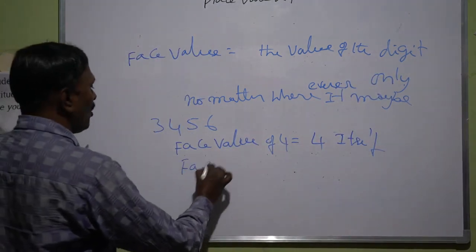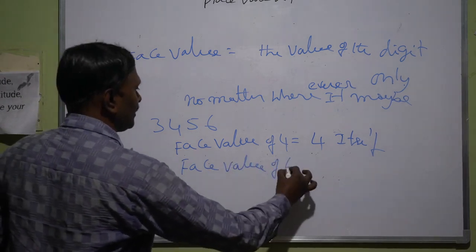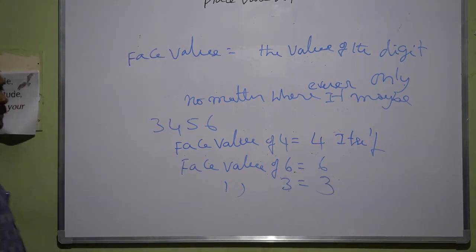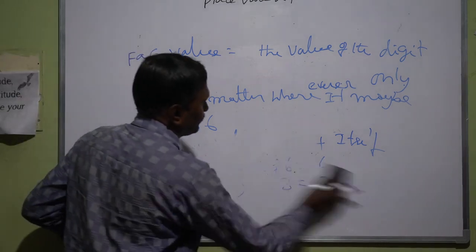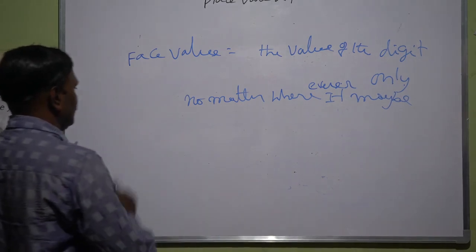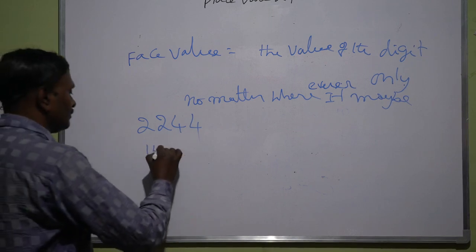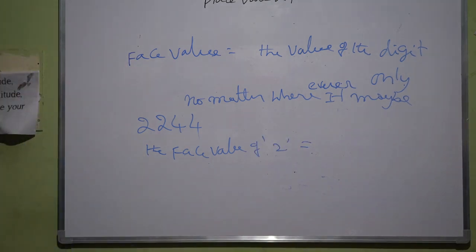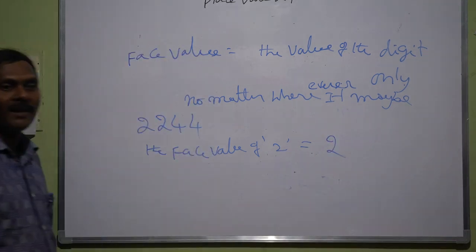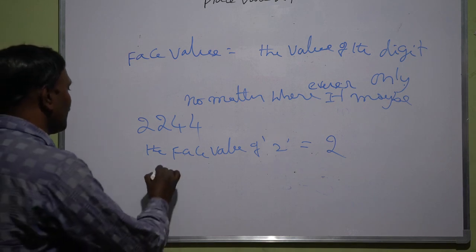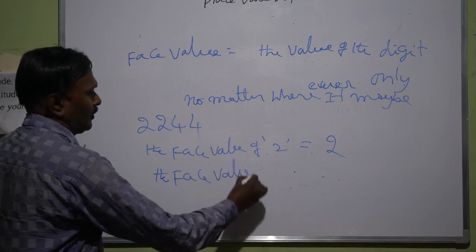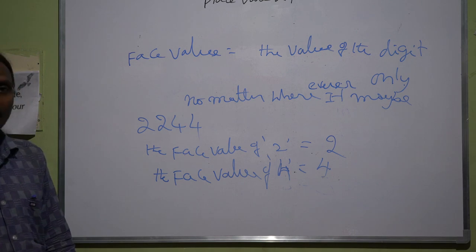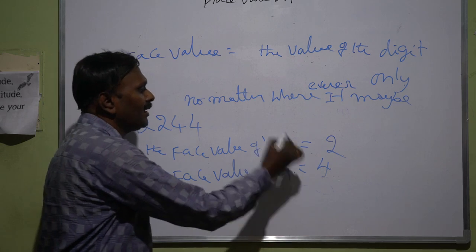Face value of 6 is 6 itself. Face value of 4 is 4, face value of 3 is 3 itself. Here, the face value of 2 is 2 itself only, no matter how many times the number repeats. The face value of 4 is equal to 4 only, no matter how many times it repeats and no matter wherever it may be. So the value of a given digit is the digit itself only.